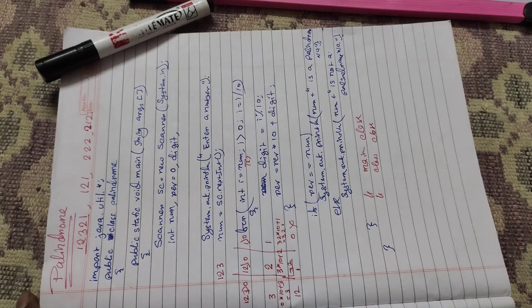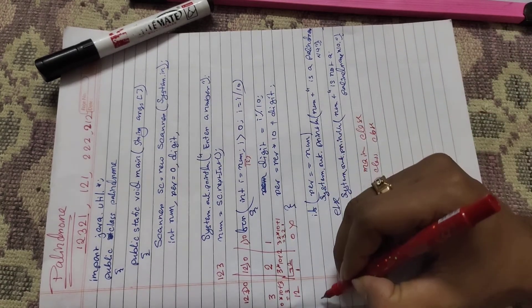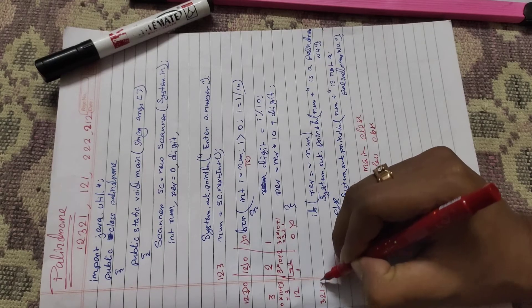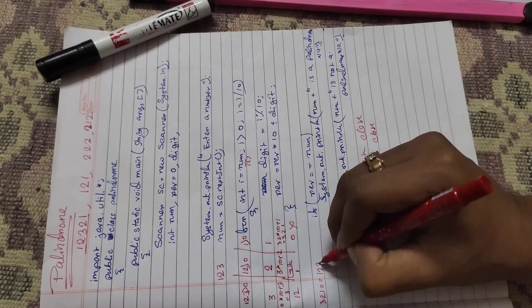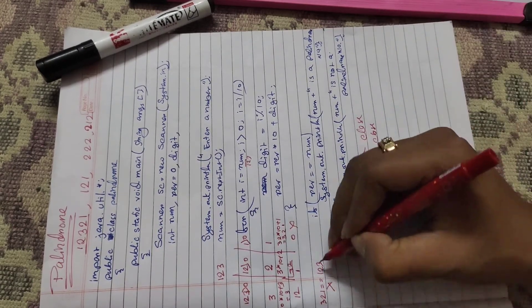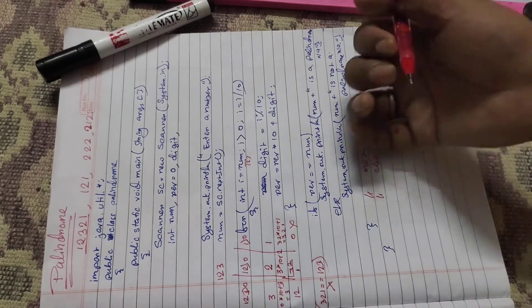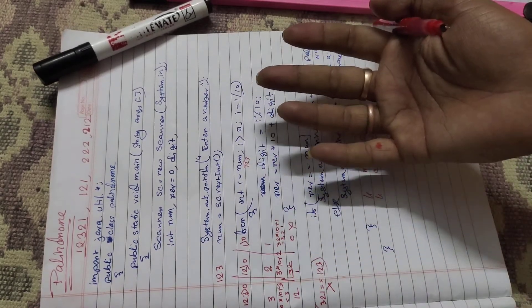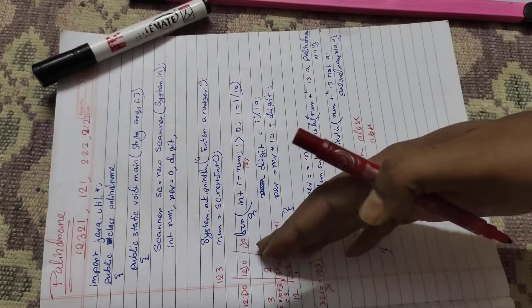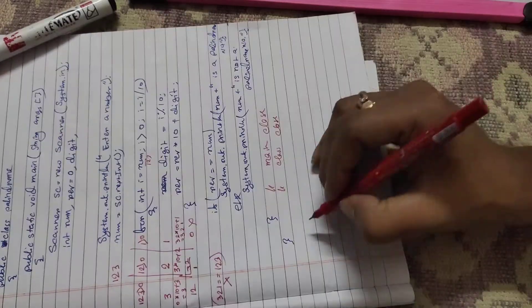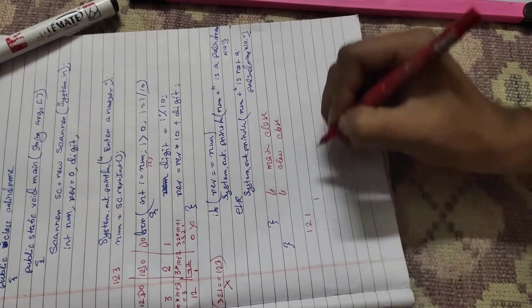Now 321 double equals 123? No. So here it shows "not a palindrome number". For example, if we use 121...